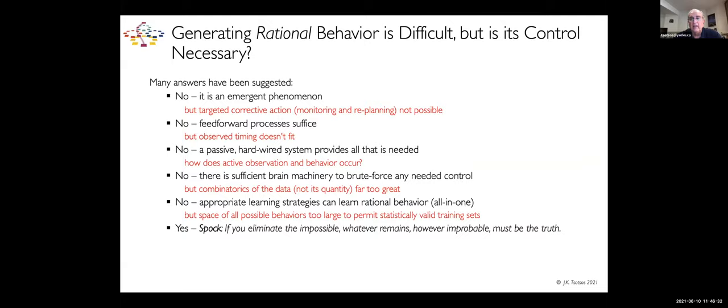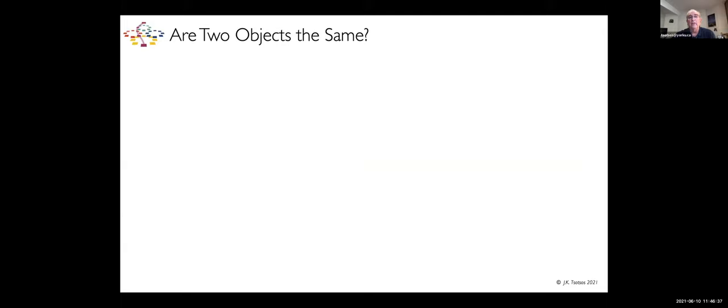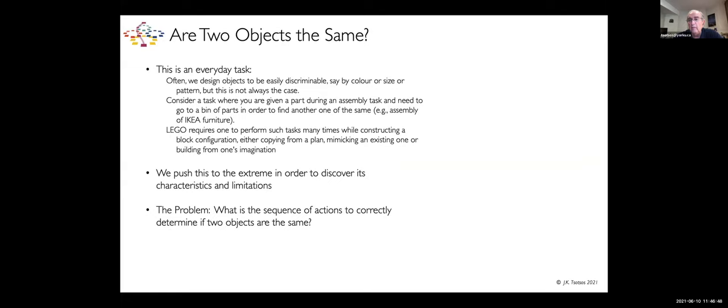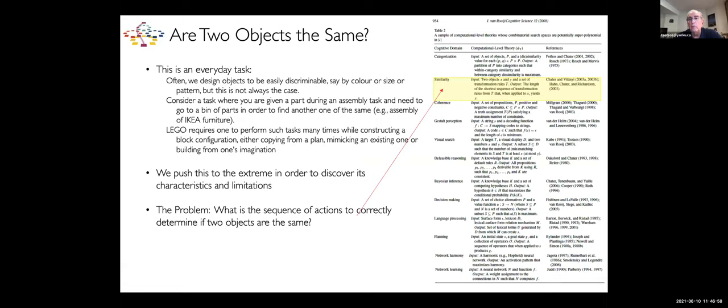We're going to look at the problem of same, different. Are two objects the same? This is an everyday sort of task. What we're going to do is push this to the extreme in order to try and discover its characteristics. We're really trying to solve what is the sequence of actions to correctly determine if two objects are the same. This is one of Iris's problems in her list. It's computationally intractable to do similarity.